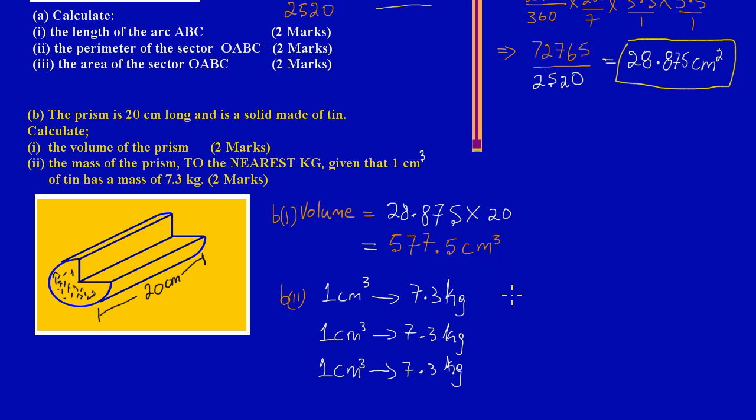We could say the mass of the prism—let's make a statement over here for part two—since we don't have the time to go through all of that, we could say the mass of prism is equal to, I'm simply going to take 577.5.